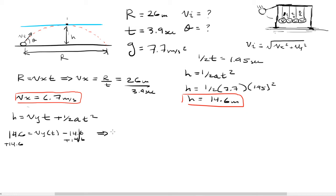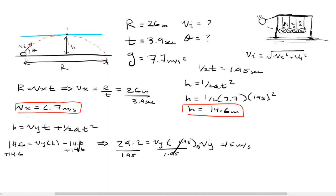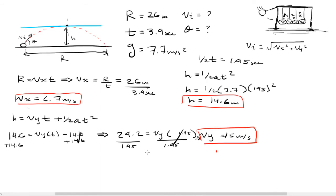So that gives us 14.6 times 2, so 29.2 equals Vy times the time, which is 1.95. And then we'll divide both sides by 1.95. And we'll figure out that the velocity in the y is equal to 14.97. So let's go ahead and round that up to 15 meters per second. So that's our velocity in the y. Let's box up our answer here.